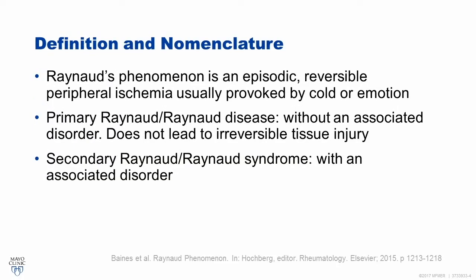We need to straighten out the definition for Raynaud. Raynaud's phenomena is the actual act of the color change — it is an episodic, reversible peripheral ischemia, which is usually provoked by cold or emotion. There are two commonly used terms: primary Raynaud, also known as Raynaud's disease, which has no associated disorder and no injuries. Folks in Europe tend to use the term Raynaud's disease, while in the U.S., primary Raynaud is preferred. The other is secondary Raynaud, also known as Raynaud's syndrome, which has an associated disorder. Our goal is to differentiate between the two.